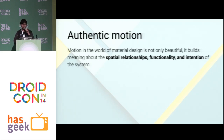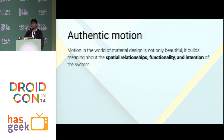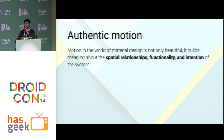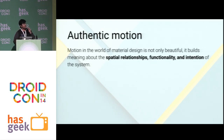Next, we look at authentic motion. Before material design, motion and animation had no guidelines — people would use it whenever they wanted, like an explosion between slides, which looks cool but serves no purpose. For the first time, Android and Google have brought the concept of authentic motion, where animation is designed to bring in spatial relationships, functionality, and intention of the system.